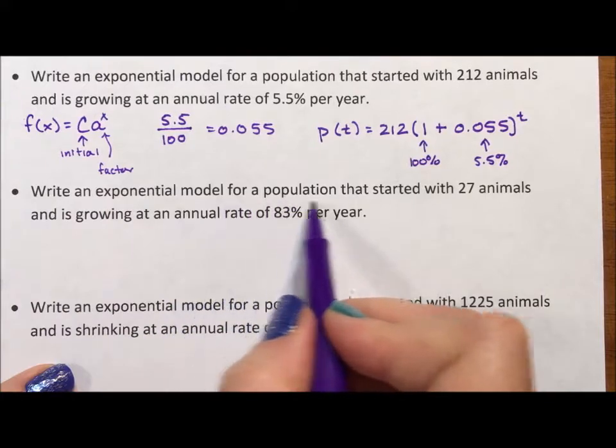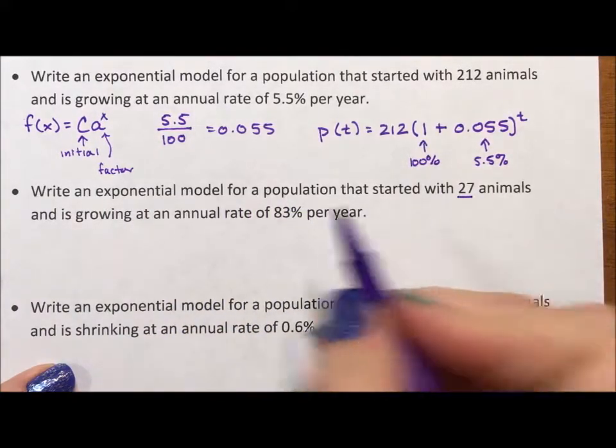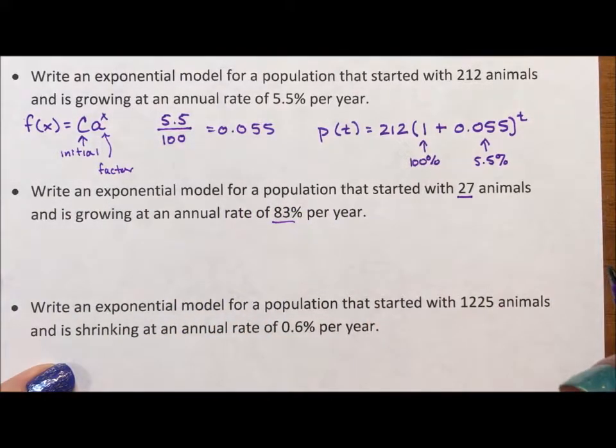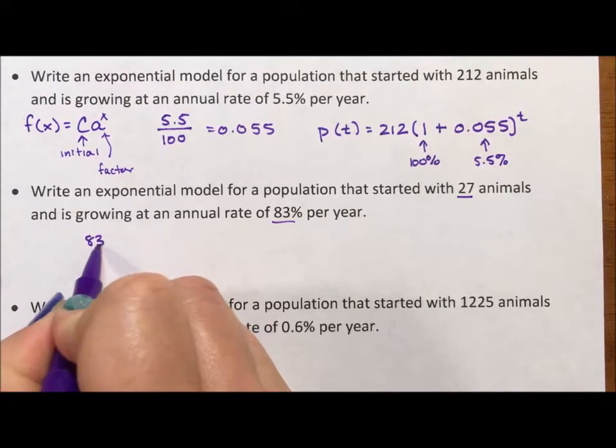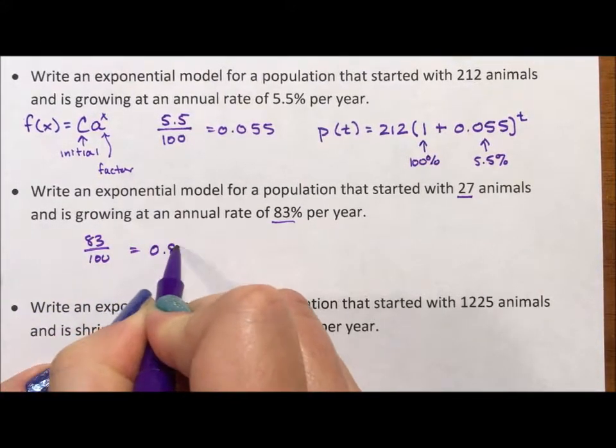Write an exponential model for a population that starts with 27 animals and is growing at 83 percent per year. So 83 percent is 0.83.